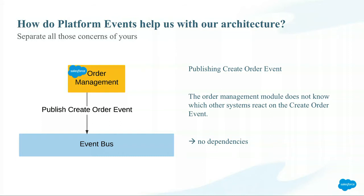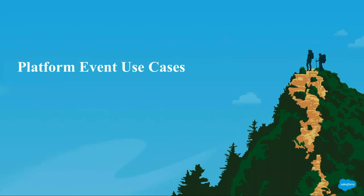In this 'create order event' we can put data — if we only want the order number then we only put the order number in there; if we need more information for systems subscribing to the event then we put more in. It works in a very similar way to an S-object. So there are no dependencies anymore.